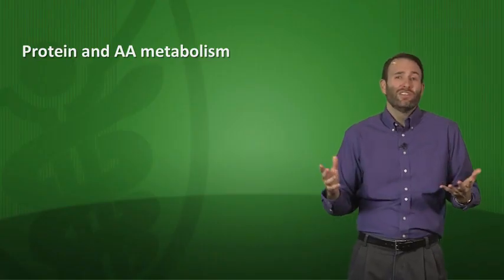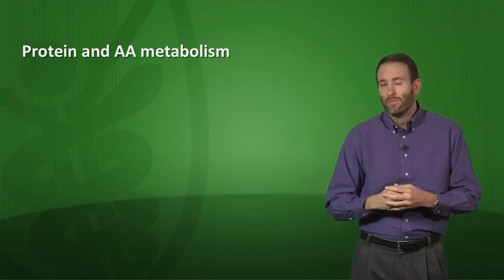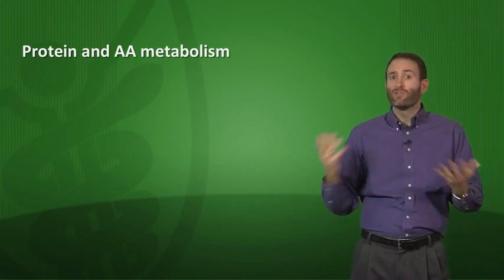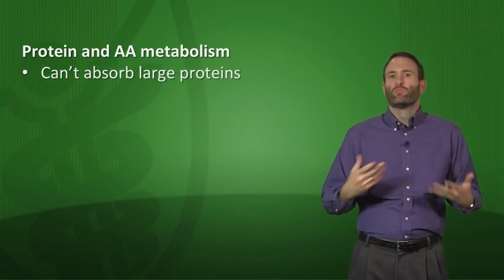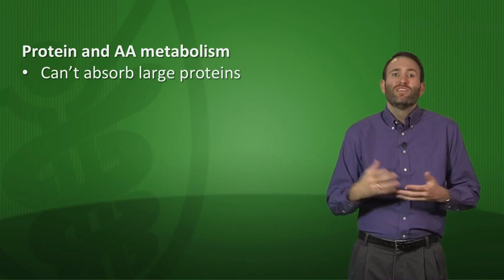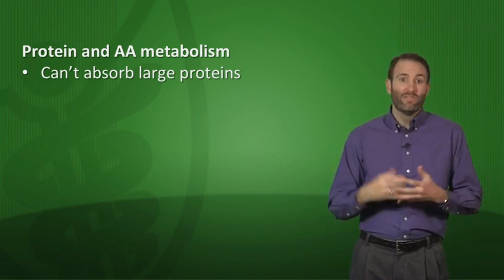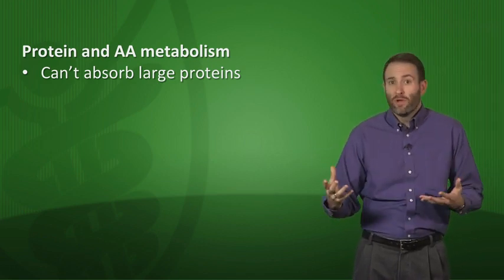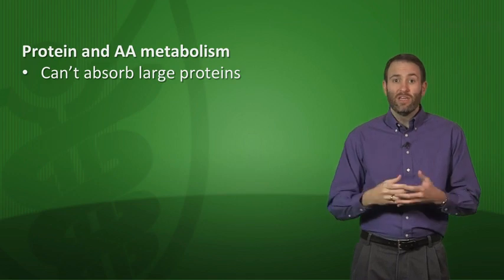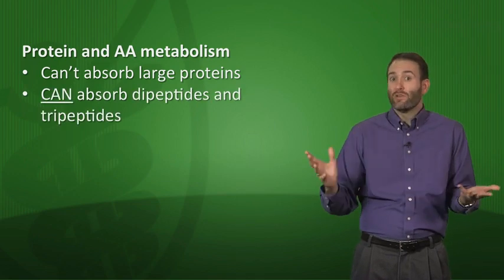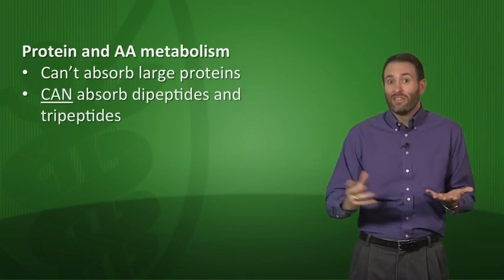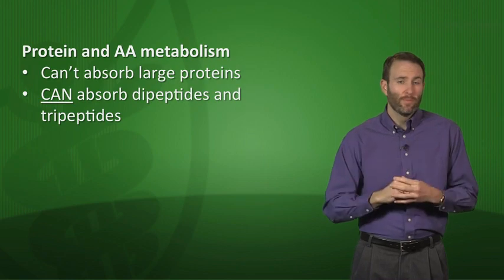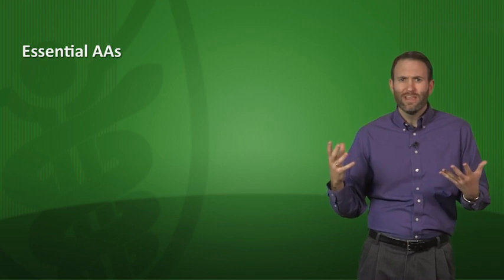Let's talk about amino acid metabolism. Your intestinal cells in your gut can't absorb very large proteins — those proteins have to be broken down into individual amino acids in the gut before they can be absorbed. However, the gut can actually absorb dipeptides and tripeptides, which is a good thing to know.